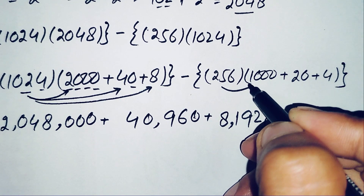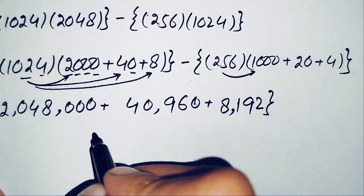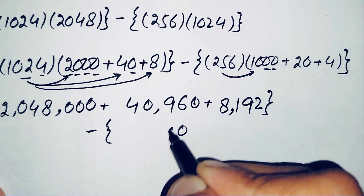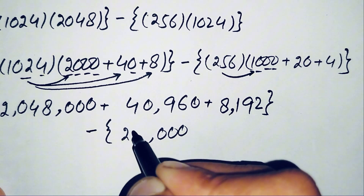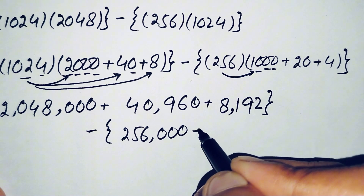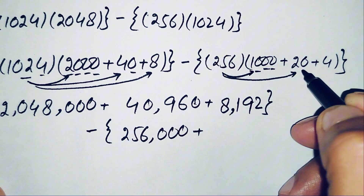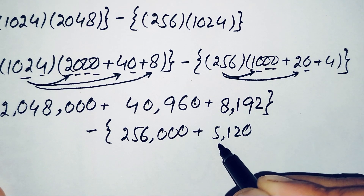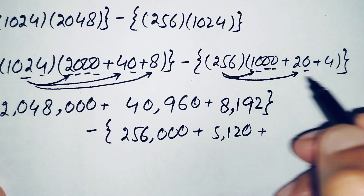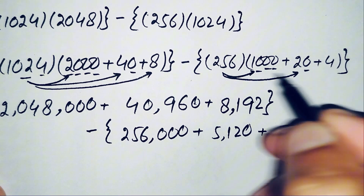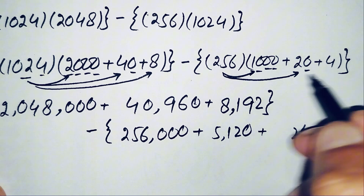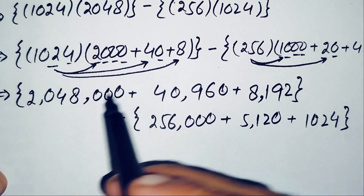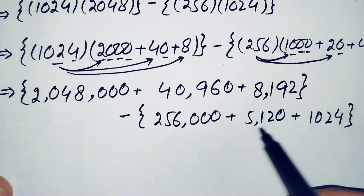Now we multiply 256 with each part: 256 times 1000 gives 256,000. Then 256 times 20: 256×0=0, 256×2=512, so this gives 5,120. Then 256 times 4: 4×6=24, carry 2; 4×5=20 plus 2 is 22, carry 2; 4×2=8 plus 2 is 10. So 256 times 4 gives 1,024. The sum of these three results gives 262,144.